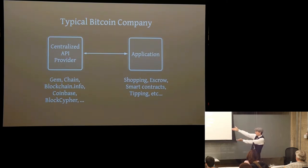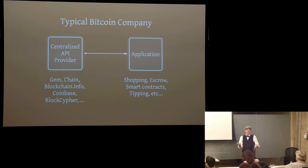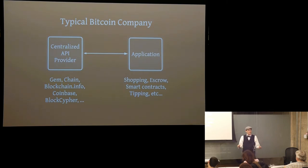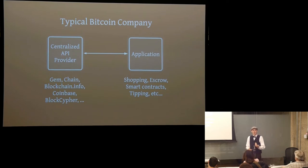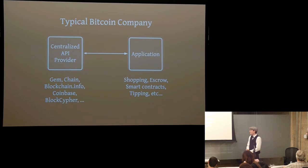The typical way to do that is to use some sort of a centralized API provider — there are plenty of those. But the problem is we have a decentralized, trustless currency and yet you're trusting a centralized company to host your access to the blockchain. It's convenient, but is there another way? That's where LibBitcoin comes in.